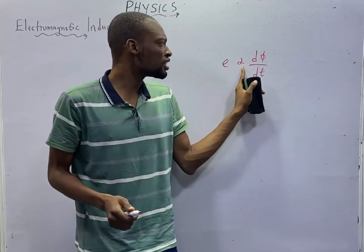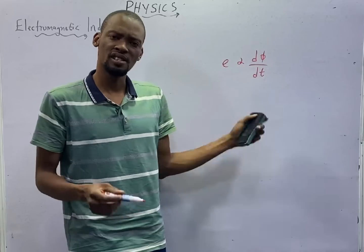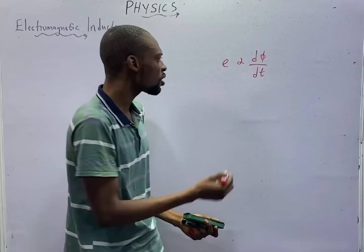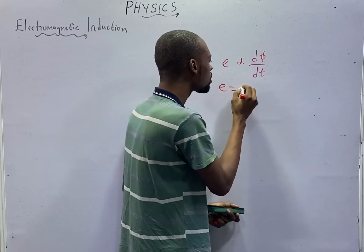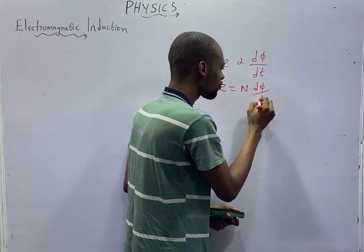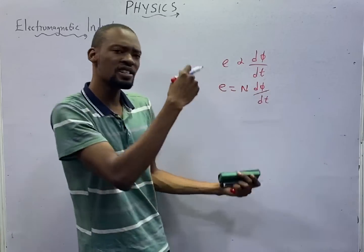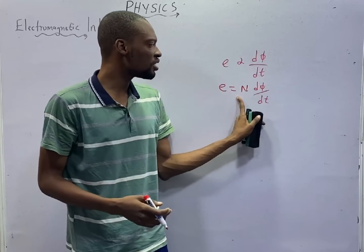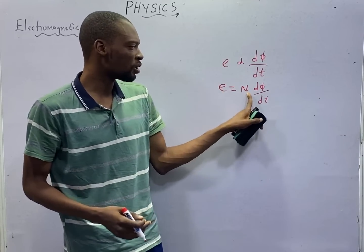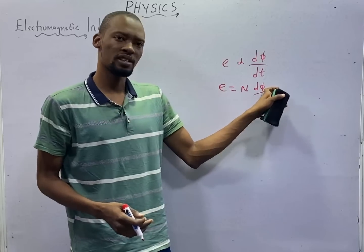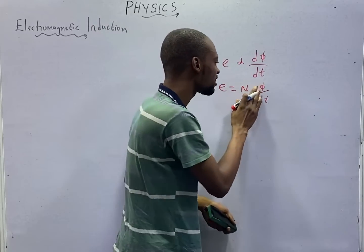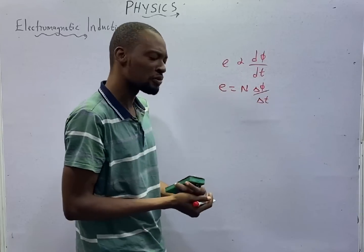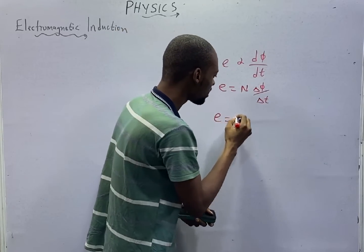Now, we don't use a proportionality sign in mathematics or in physics — we convert to equals. As such, we introduce a constant N. N is the number of loops in the coil. So the induced EMF equals the number of loops in the coil times the change in magnetic flux, which is the same as writing it in delta form.